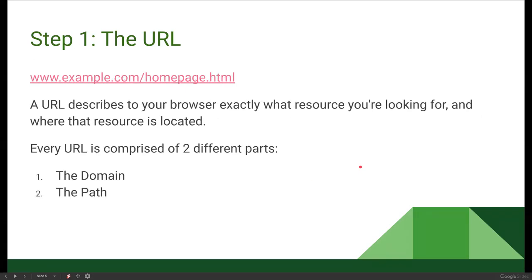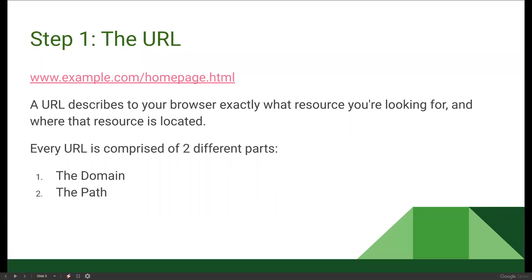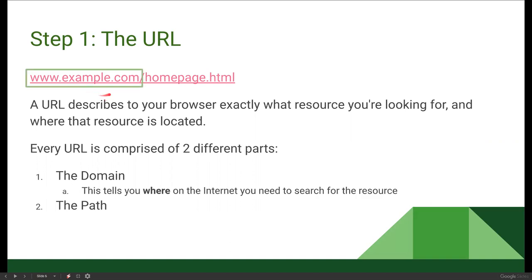An example URL is www.example.com/homepage.html. This URL describes to your browser exactly what resource you're looking for and where it is located. Every URL is comprised of two distinct pieces. Part one is the domain — that's the www dot whatever your website is dot com, dot org, dot net, or whatever extension you have. This is where on the internet you need to search for the resource.